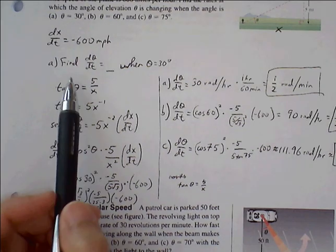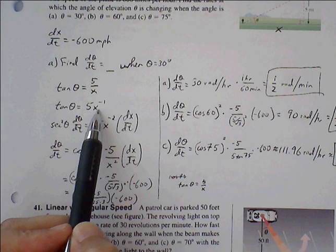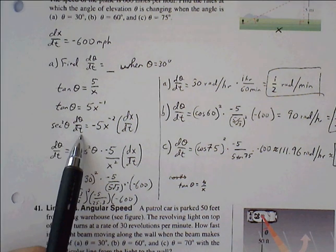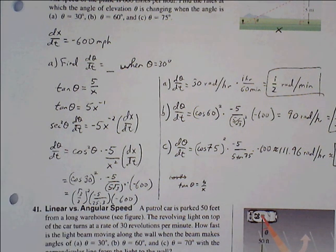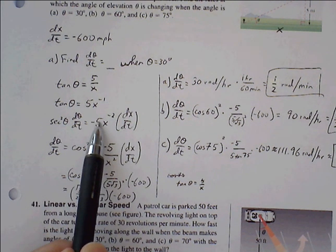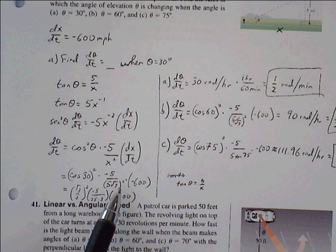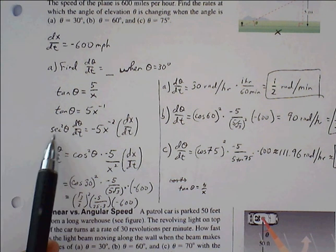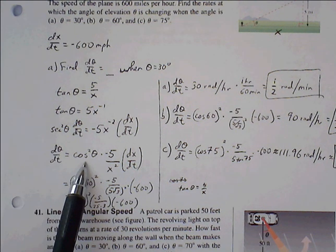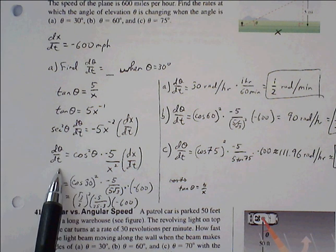Before we find the derivative, let's go ahead and move this x up to the top. Make it 5x^(-1) to get it ready for power rule. So tangent becomes secant squared theta dθ/dt. Remember with related rates, we're finding the derivative of each variable with respect to time, so everything gets attached with d/dt. 5x^(-1) goes through power rule: bring down the negative 1, so negative 5x^(-2) times dx/dt. I'm going to divide by secant squared, which is the same thing as multiplying by cosine squared. So now we can solve for dθ/dt.